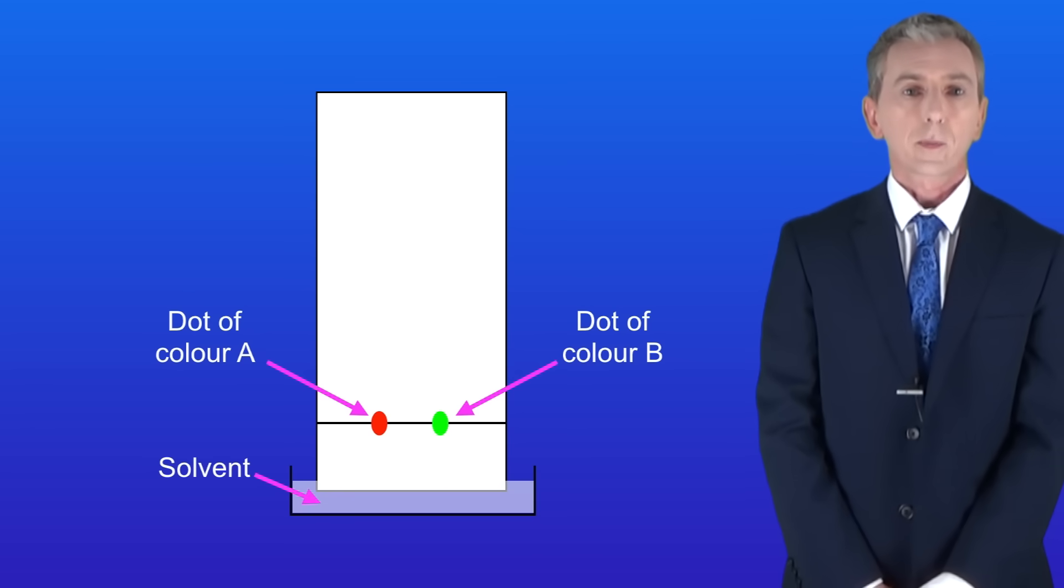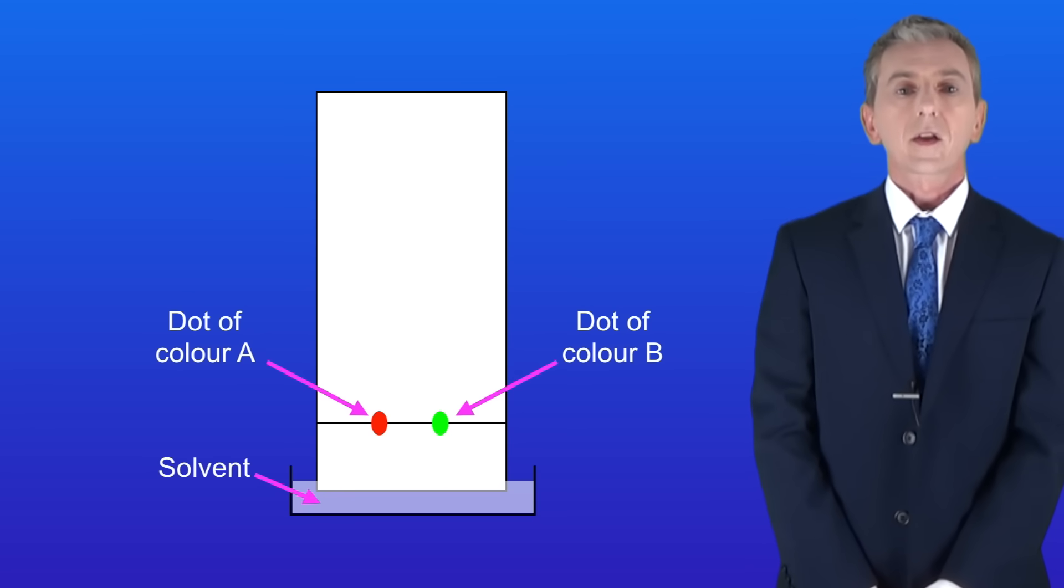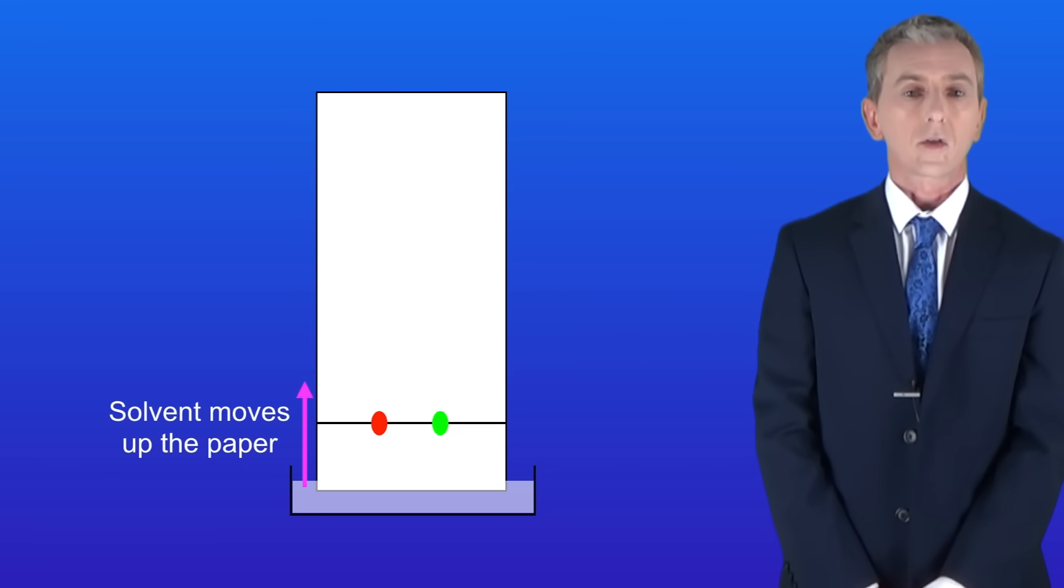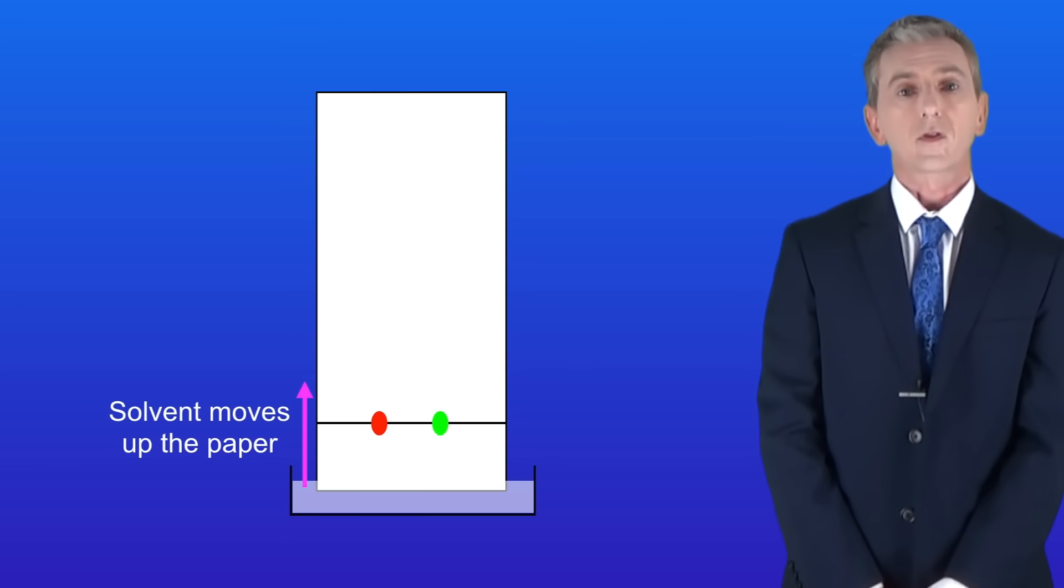We now place the bottom of the paper into a solvent. Remember that a solvent is a liquid that will dissolve substances and there are lots of different solvents. Now here's the really important part. The solvent now makes its way up the paper and it dissolves the ink and the two colored dots and these are now carried up the paper as well.